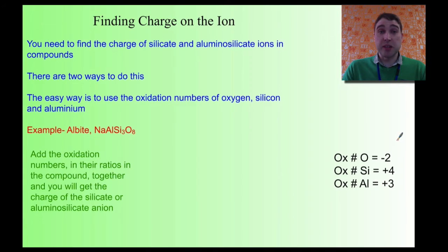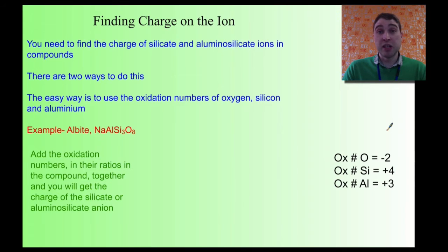So, what do you need to be able to do? You need to be able to find the charge of the silicate or aluminosilicate ion. There are a couple of ways of doing it — I'll take you through two different ways. The first one is to use the oxidation numbers of the components that make up the silicate or aluminosilicate. Basically, you add those together in the right ratio and that will give you the charge of the aluminosilicate ion.